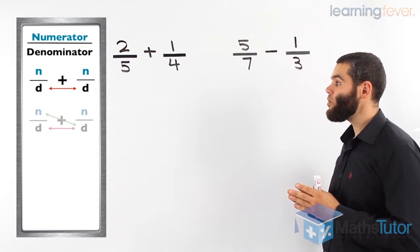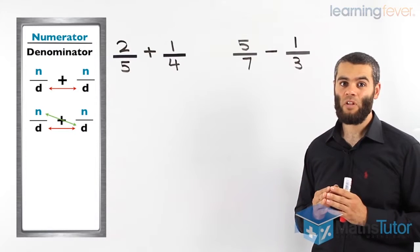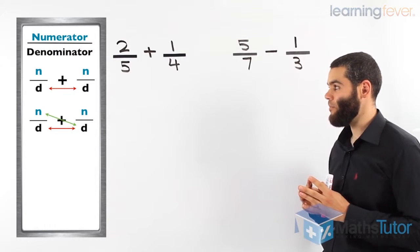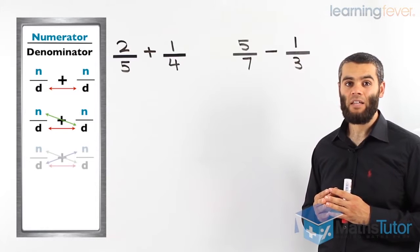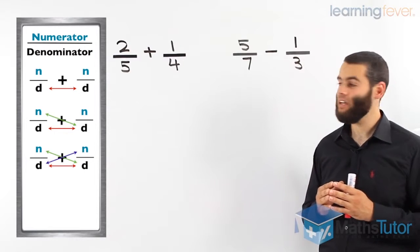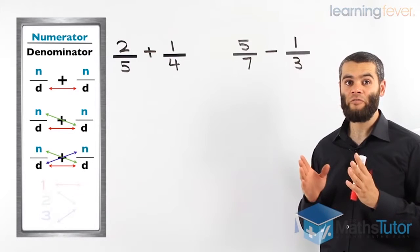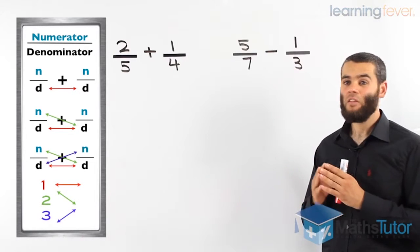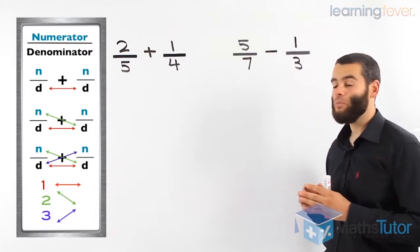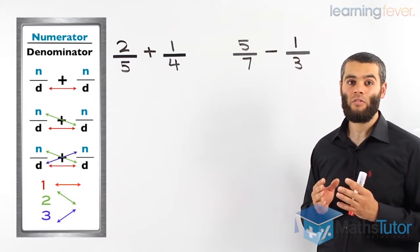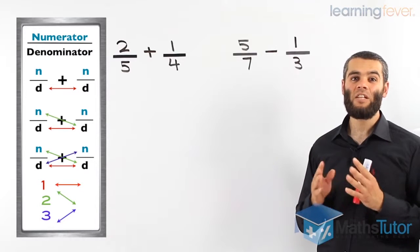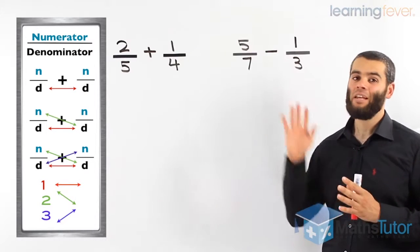The second step is to multiply the first numerator with the other denominator, as shown by the purple arrow. Then the third step is to multiply the second numerator with the first denominator. So: first, multiply the denominators together; second, multiply the first numerator with the second denominator; and lastly, multiply the second numerator with the first denominator. What we are doing is making the denominators the same. That's what this process does. Let's see it in action.